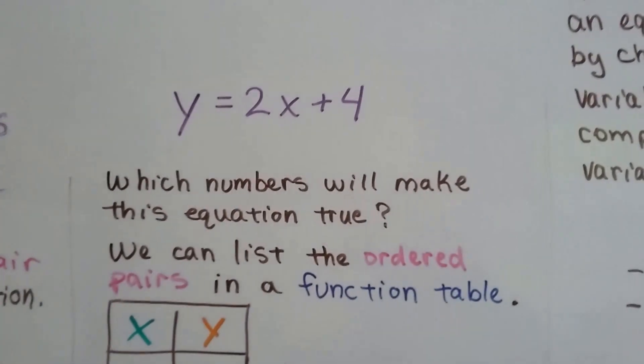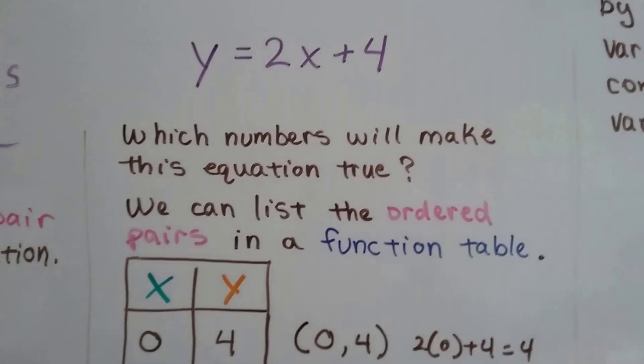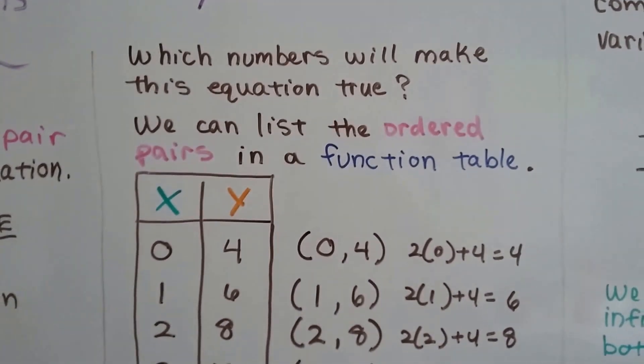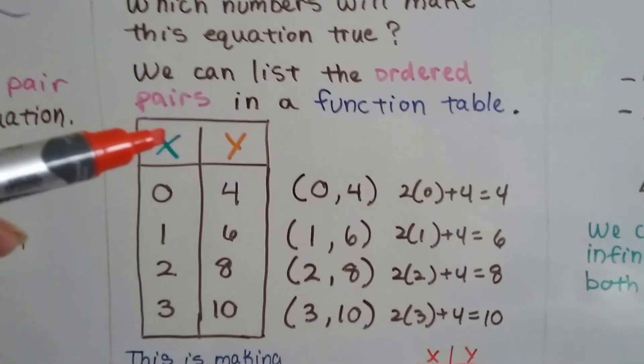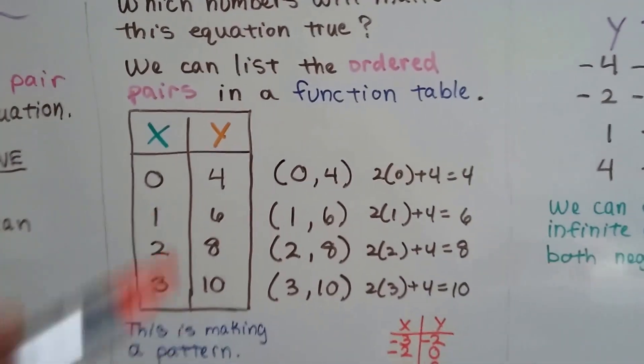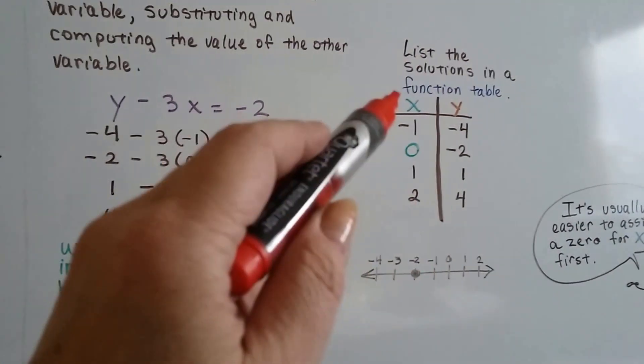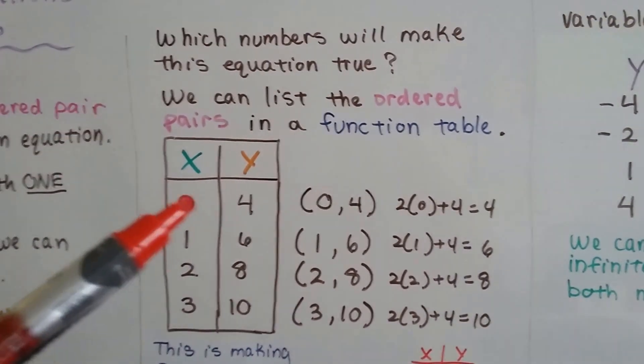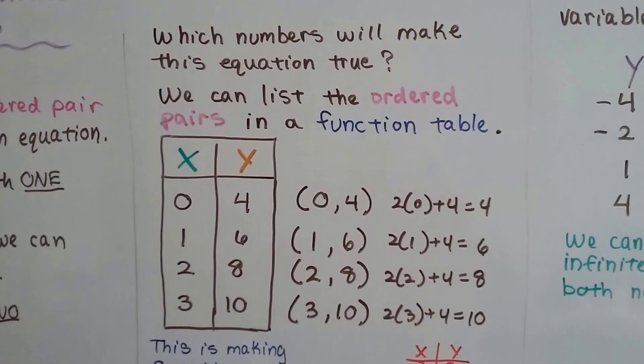So we've got y equals 2x plus 4. Which numbers will make this equation true? We can list the ordered pairs in what's called a function table. That's this, with x on the left and y on the right. You don't have to put a box around it. People usually just make a t and then put the x on the left and the y on the right. So we can start by plugging a 0 in for x and see what that gives us for y so we can complete our table.